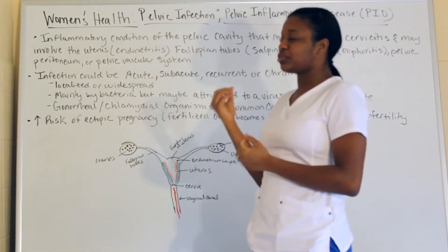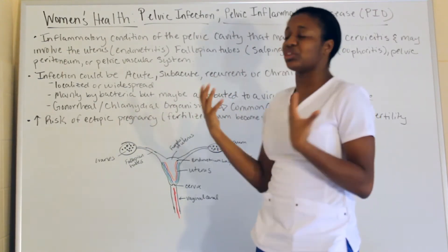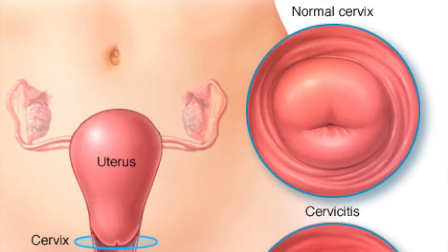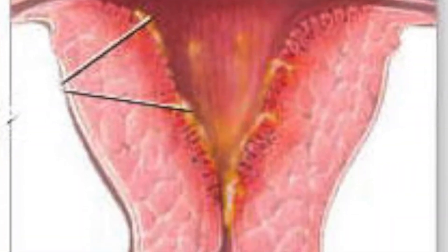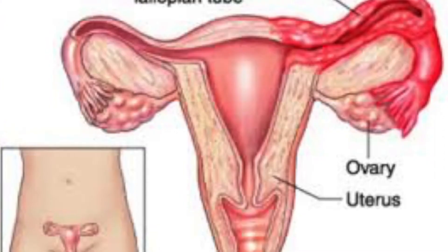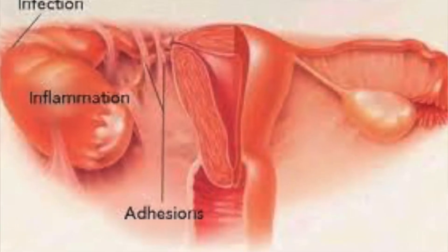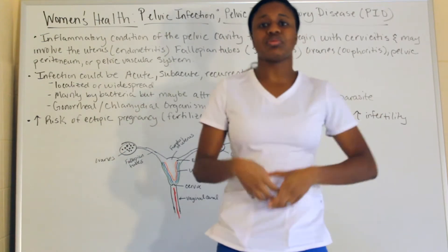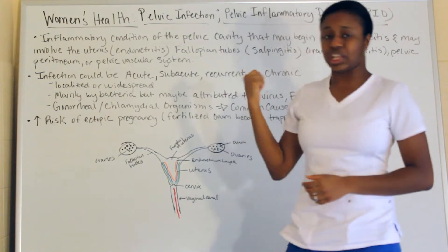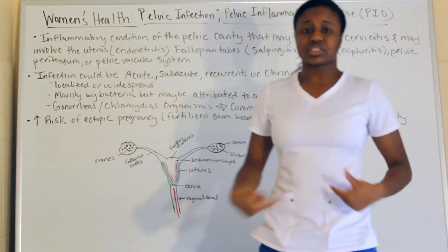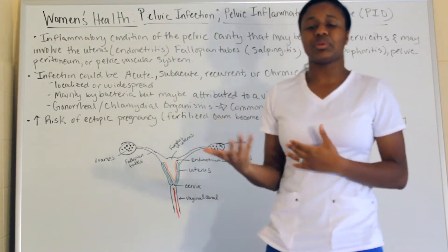Anything with '-itis' in it refers to inflammation. With PID, there is inflammation of the cervix (cervicitis), the uterus (endometritis), the fallopian tubes (salpingitis), and the ovaries (oophoritis). All of these areas are within the pelvic region, and it can also involve the pelvic peritoneum and the pelvic vascular system.